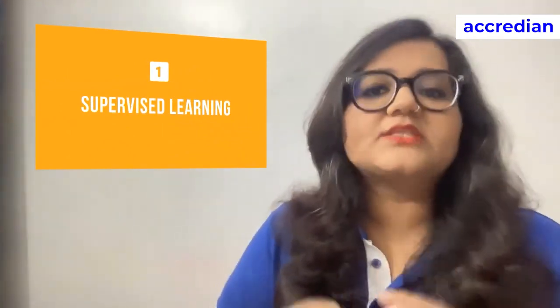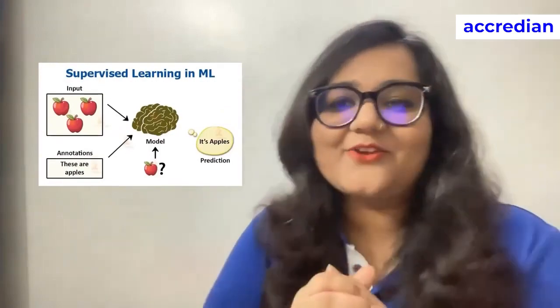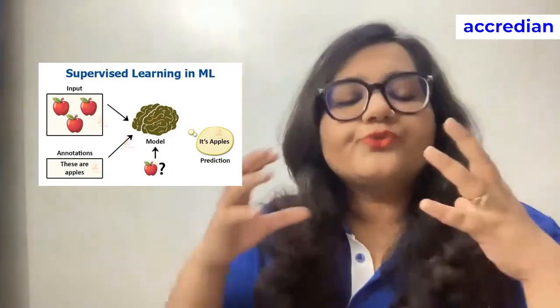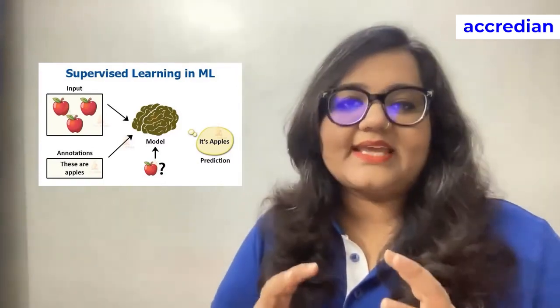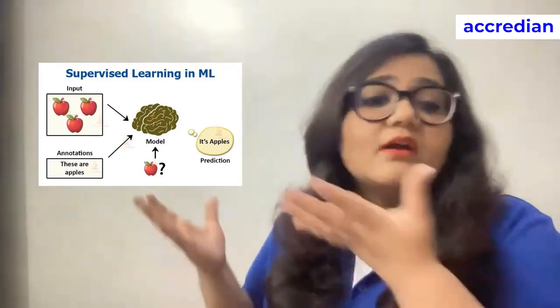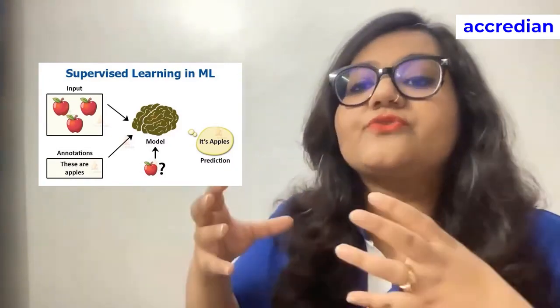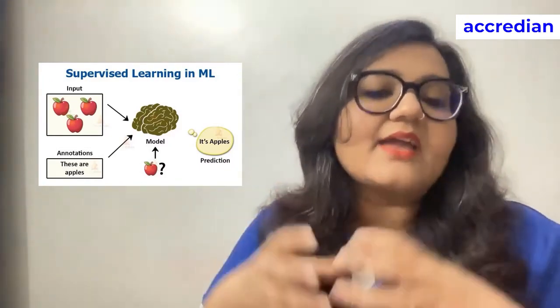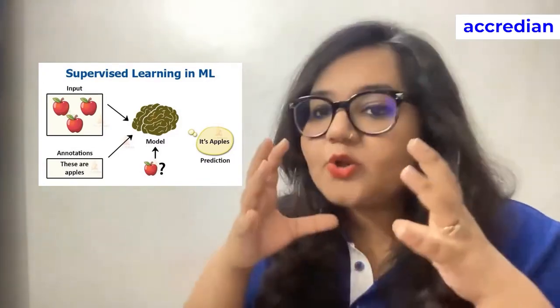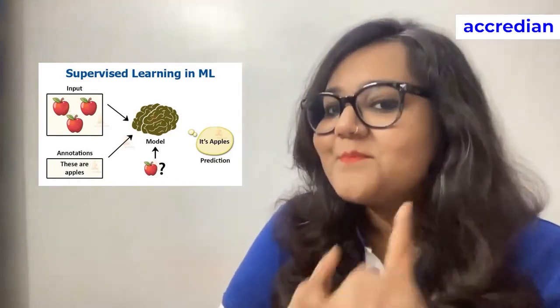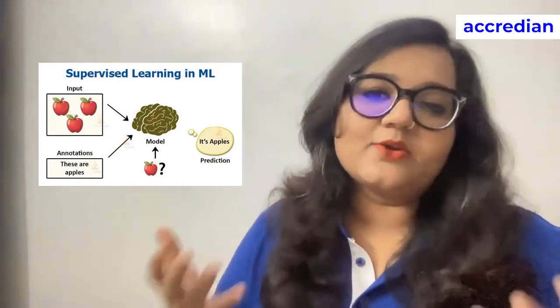Coming to number one, which is supervised learning — to understand how it works, I'll show you the example on the side of your screen. You have to train a model to recognise an apple. First, you provide a data set that contains pictures of different kinds of fruits. Then provide another data set that lets the model know that these are pictures of apples. This completes the training phase. Next, provide a new set of data that only contains pictures of apples — at this point the system can recognise the fruit and remember it. That's how supervised learning works; you are training the model to perform a specific operation on its own. This kind of model is often used in filtering spam mail from your email accounts.